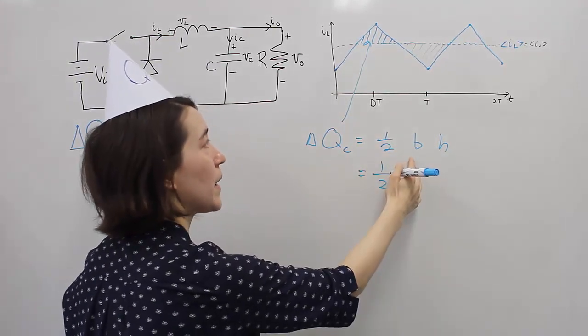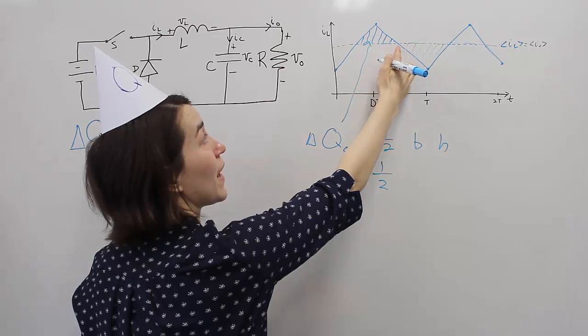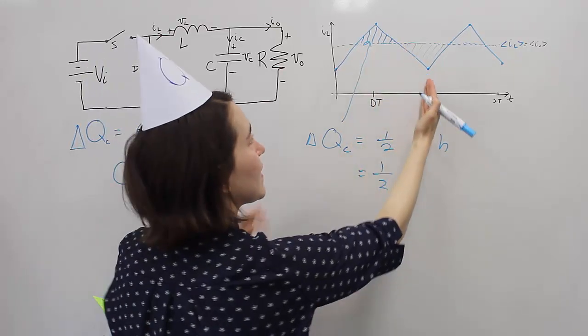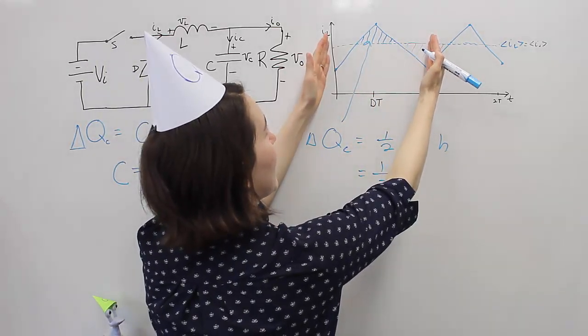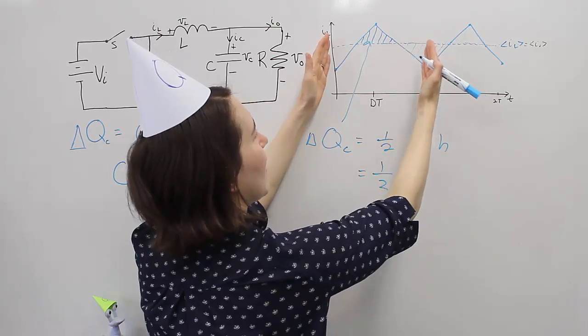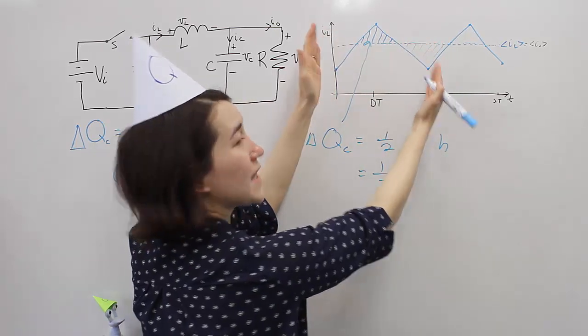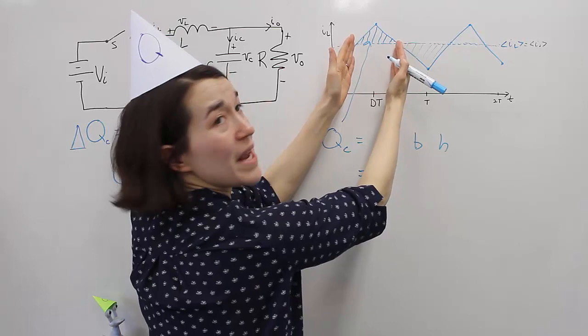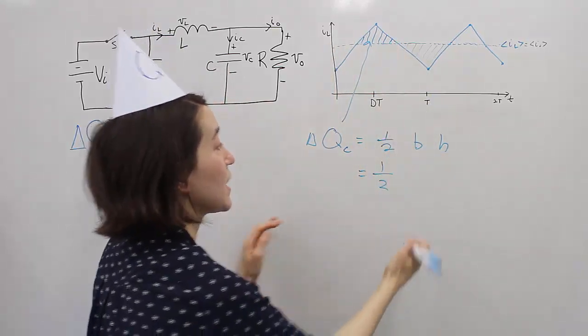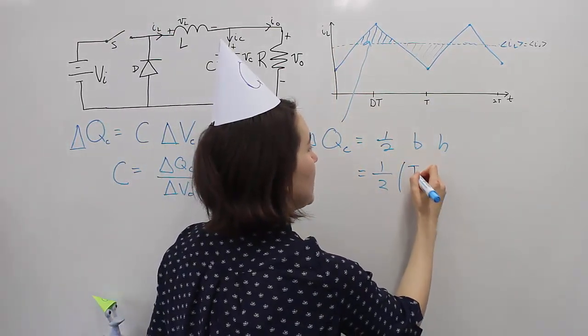So one half, the base, the base is this full value. And notice T is here, and if you look at this you can see that half of T is exactly the base of this triangle. So really, we have T over 2.